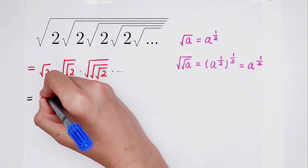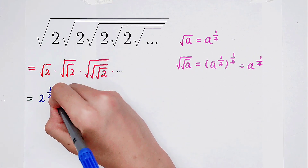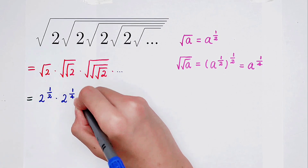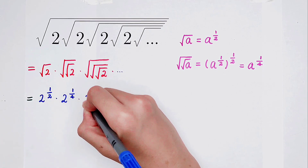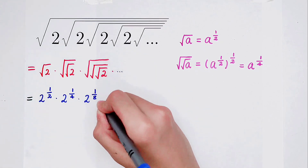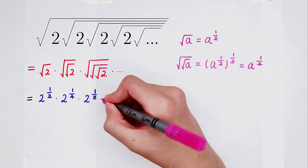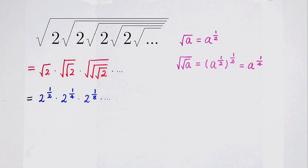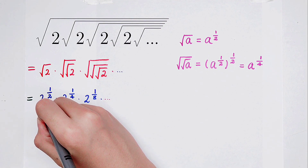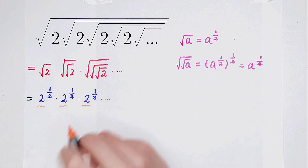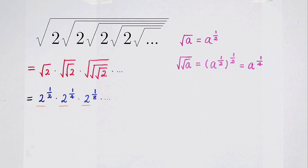Two is the a, so it's 2 to the power one-half, then times 2 to the power one-fourth, and then times 2 to the power one-eighth, and times infinity times. The bases are all the same — they are all 2.